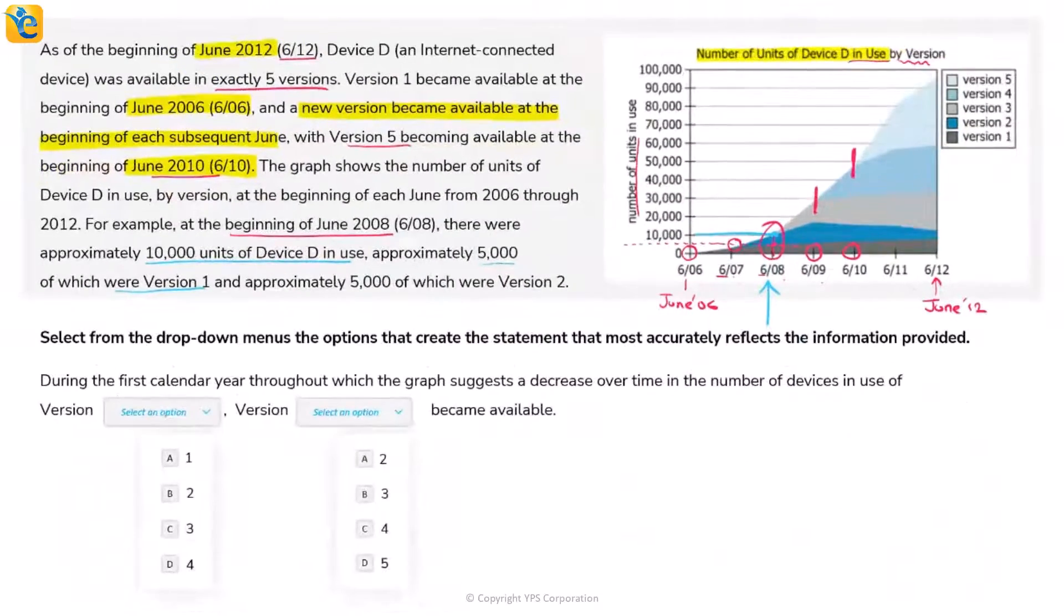Now that we understand how to read this chart and text, let's read the question. During the first calendar year throughout which the graph suggests a decrease over time in the number of devices in use of Version [blank], the choices are 1, 2, 3, 4.